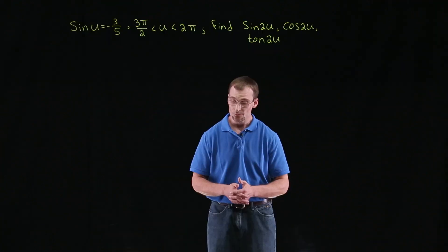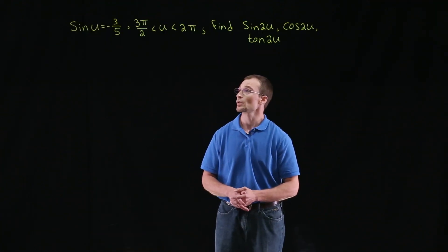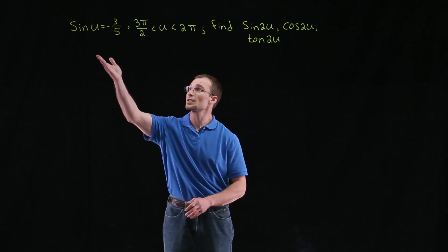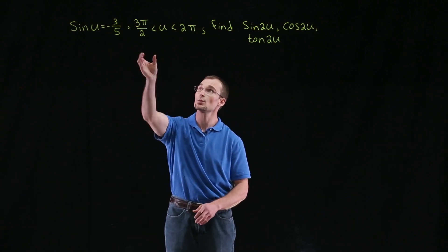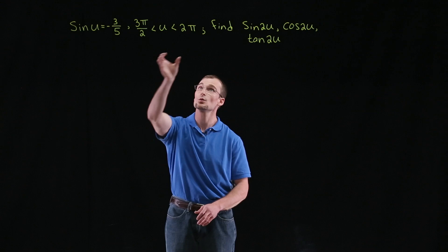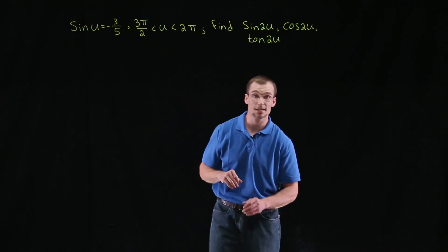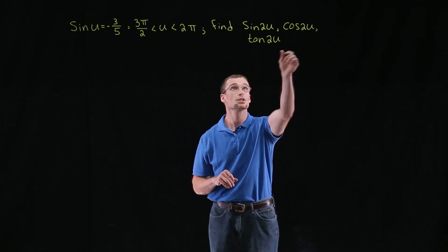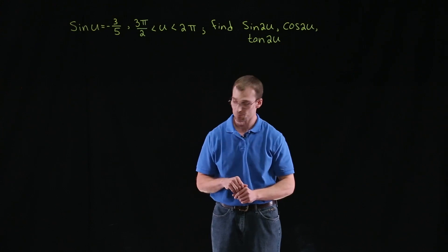Welcome, everybody. I'm Adam. In this problem, we're going to be looking at, given the conditions of sine u equal to negative three-fifths, where u is some angle between three pi over two and two pi, we're going to find the exact values of sine of two u, cosine two u, and tangent of two u.